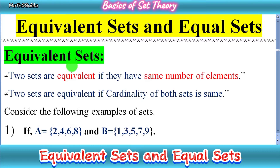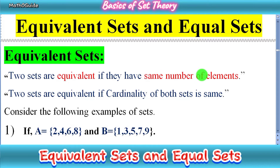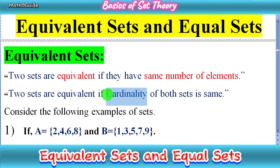Let's recall the definition of equivalent sets. Two sets are equivalent if they have the same number of elements. If they have the same number of elements, then these are called equivalent sets. Another definition is that two sets are equivalent if the cardinality of both sets is the same. Cardinality means the number of elements in a set.